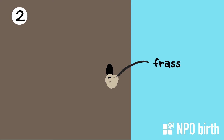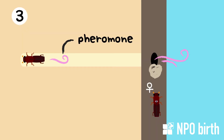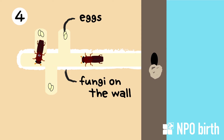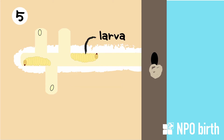And then they release a pheromone to attract females. After mating, they get into the hole and lay eggs. At this point, the fungi on the female's back sticks to the wall of the hole. When the eggs hatch, the fungi have grown enough for the larvae to eat. The larvae pass the winter in the hole eating fungi and become adults, then come out of the hole the next summer.